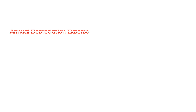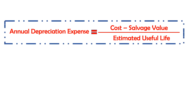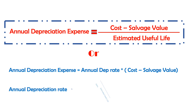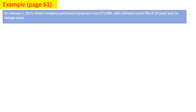To calculate the annual depreciation expense we have two methods. The first is the formula: Cost minus Salvage Value divided by Estimated Useful Life. The second uses a rate: Annual Depreciation Expense equals the Annual Depreciation Rate times (Cost minus Salvage Value). The annual depreciation rate is calculated as 100 divided by the Estimated Useful Life.